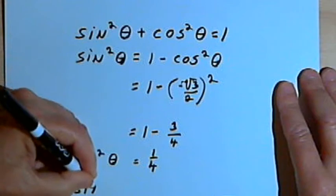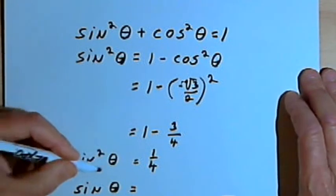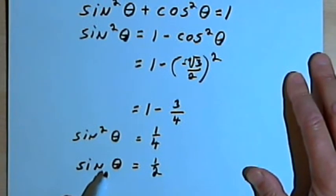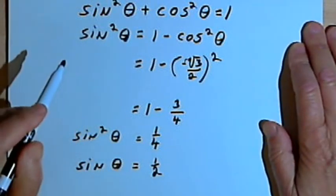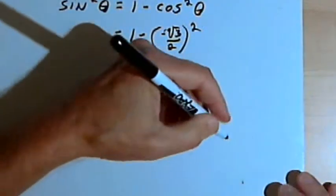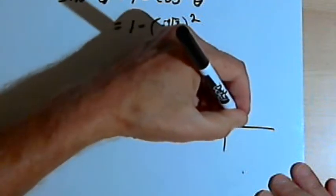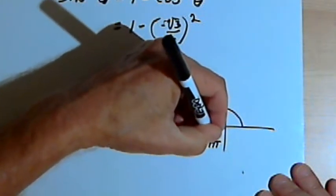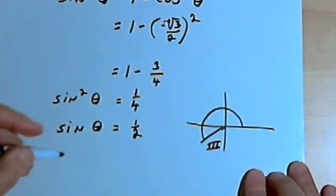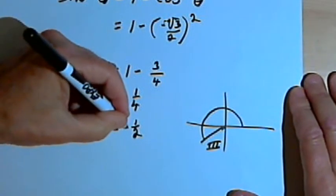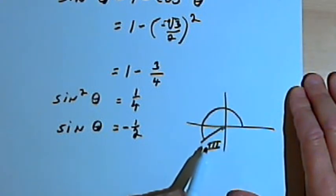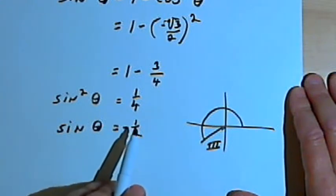We want the sine of theta, so we'll take the square root of both sides. The square root of 1 quarter is 1 half. Sines are sometimes positive and sometimes negative — that depends on what quadrant the angle terminates in. In this case it terminates in quadrant 3, where sines are negative because the y values are negative. So the sine of theta is going to equal negative 1 half.